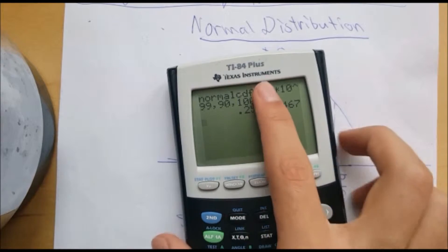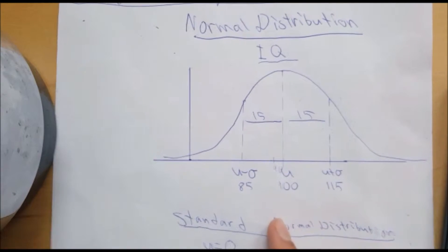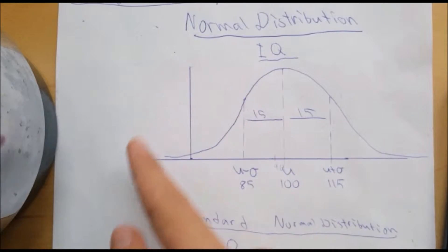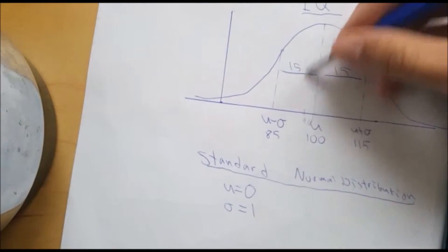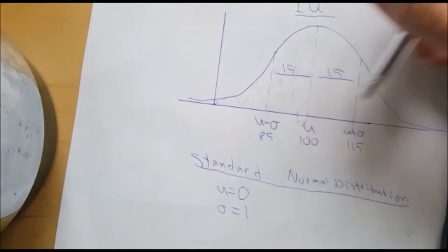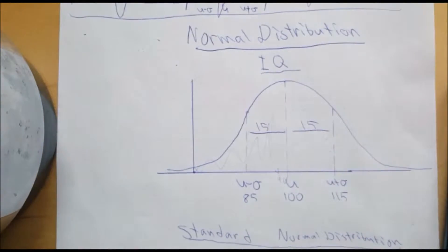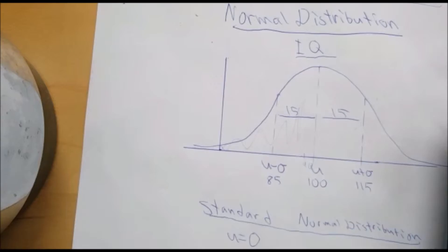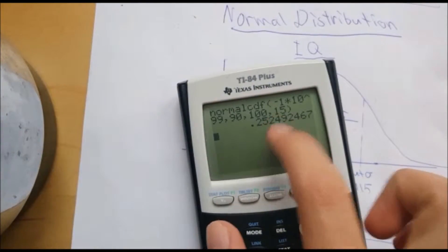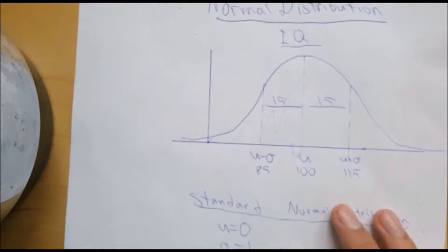And this is the probability that a person lands within this area. That's the probability that a randomly selected person has an IQ of 90 or less, and it's this value right here.